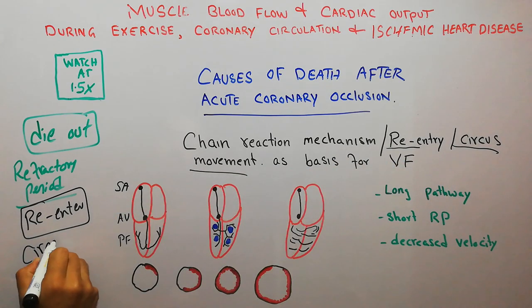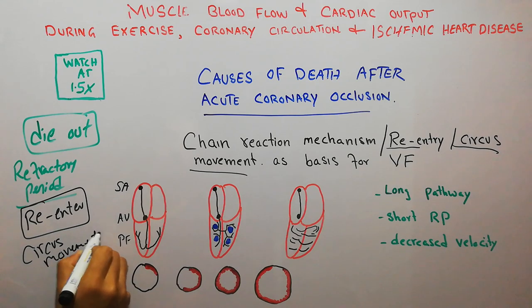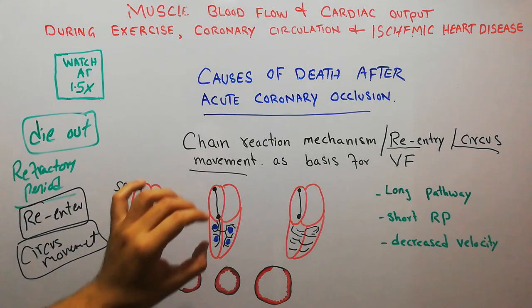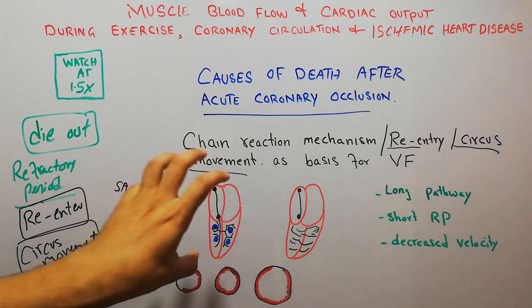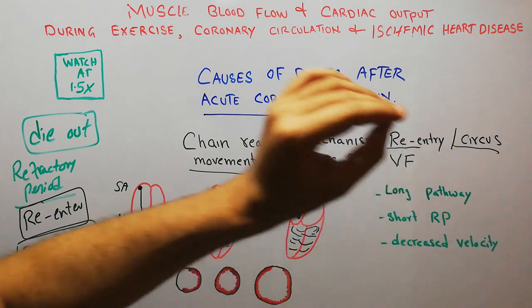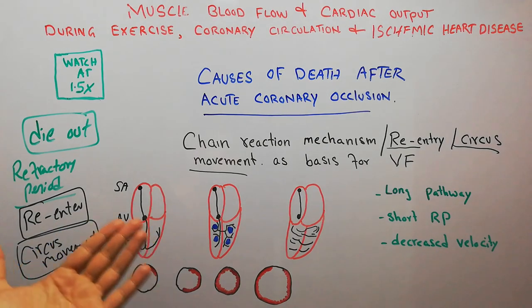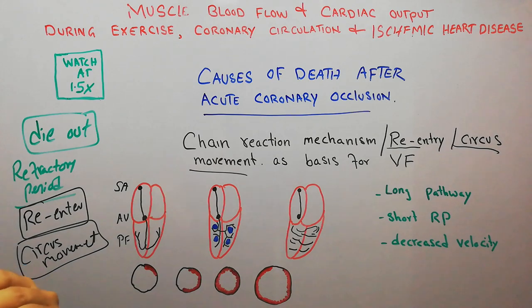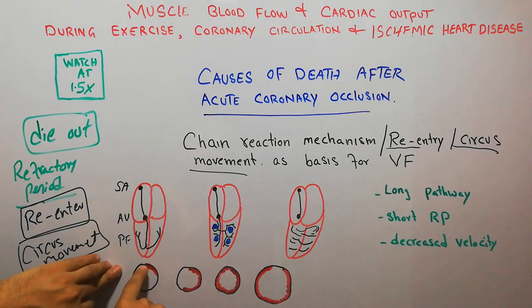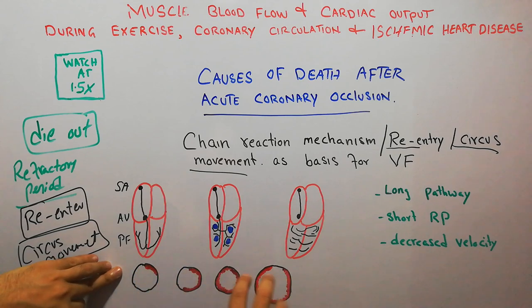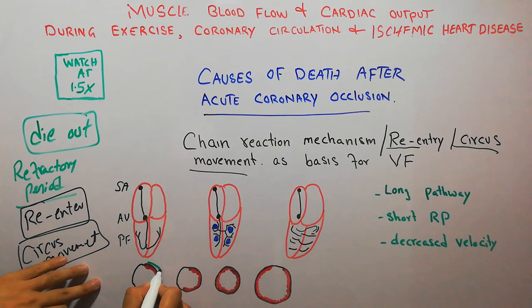It can also lead to circus movement. If in an experiment we stimulate the heart and try to produce the re-entry phenomena, the chain reaction mechanism, and introduce circus movement, then the heart can enter into ventricular fibrillation. Normally the impulse starts here, as shown in this diagram, at the SA node. Now this portion of the heart is in the refractory period.